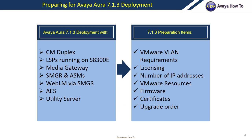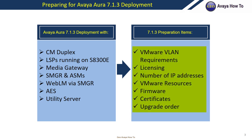In this presentation, we're going to review an Aura 7.13 deployment with the following systems: CM duplex, LSPs running on S8300E, media gateways, system manager and session managers, web LM via system manager, AES server, and utility server. The preparation items we're going to review are VMware VLAN requirements, licensing, number of IP addresses, VMware resources, firmware, certificates, and upgrade order.